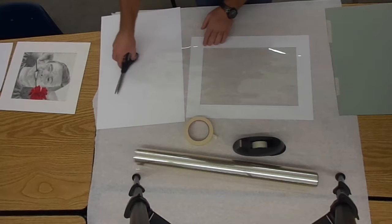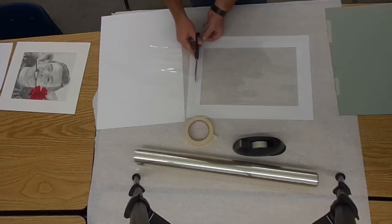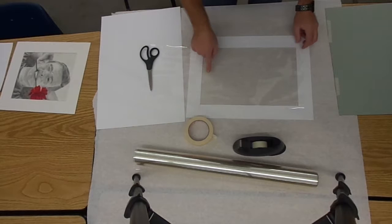Once I have that, I'm going to cut the other part off. Again, about anywhere from a half an inch to an inch longer than the opening on each side. So now I have my acetate.